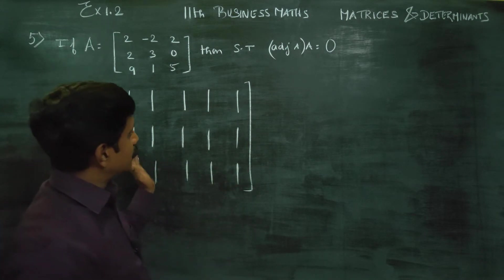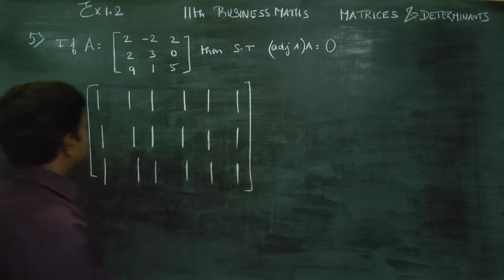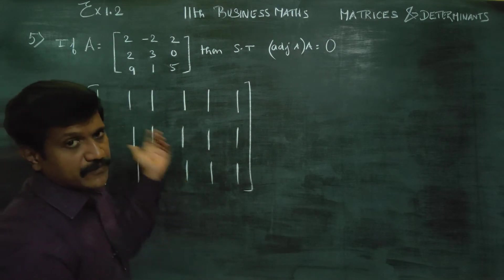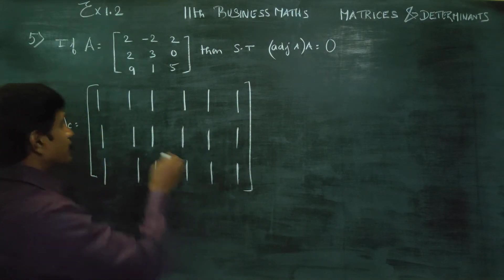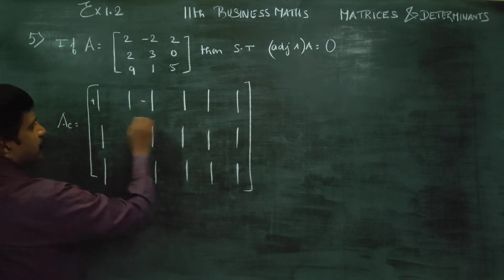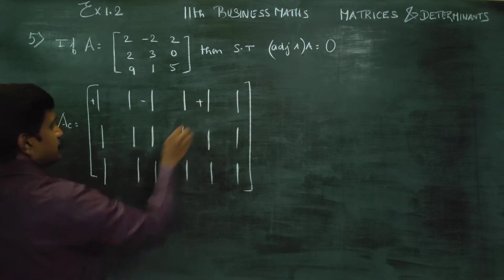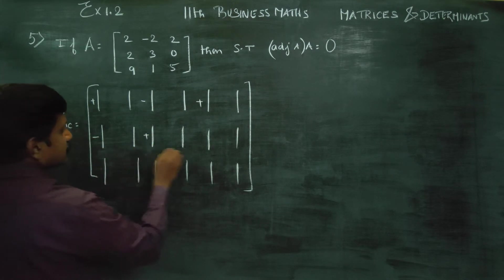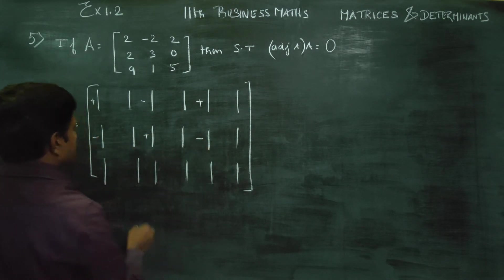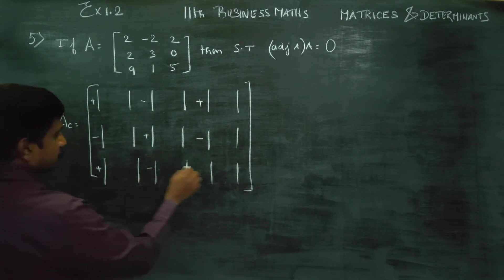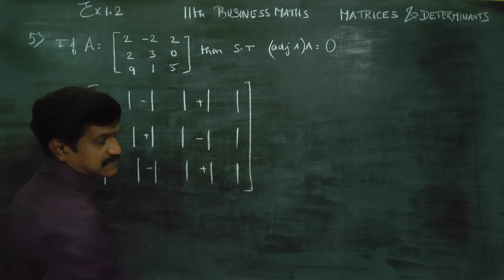For the cofactor signs, you have to assign the sign pattern: plus, minus, plus, minus, plus, minus, plus, minus, plus. This is the standard sign matrix for cofactors of a 3×3 matrix.